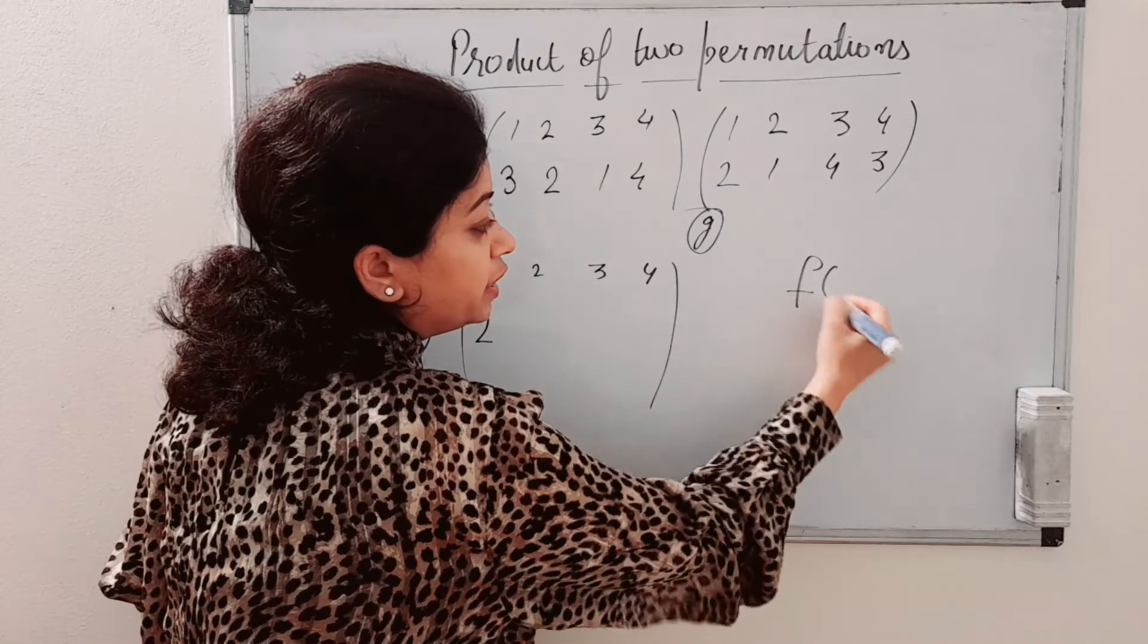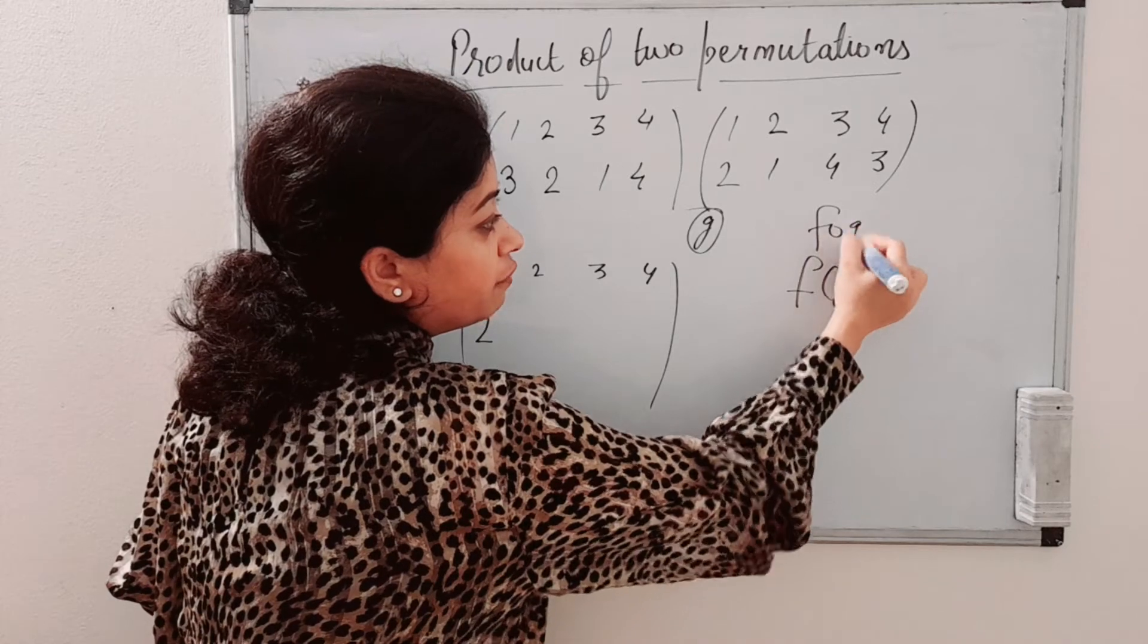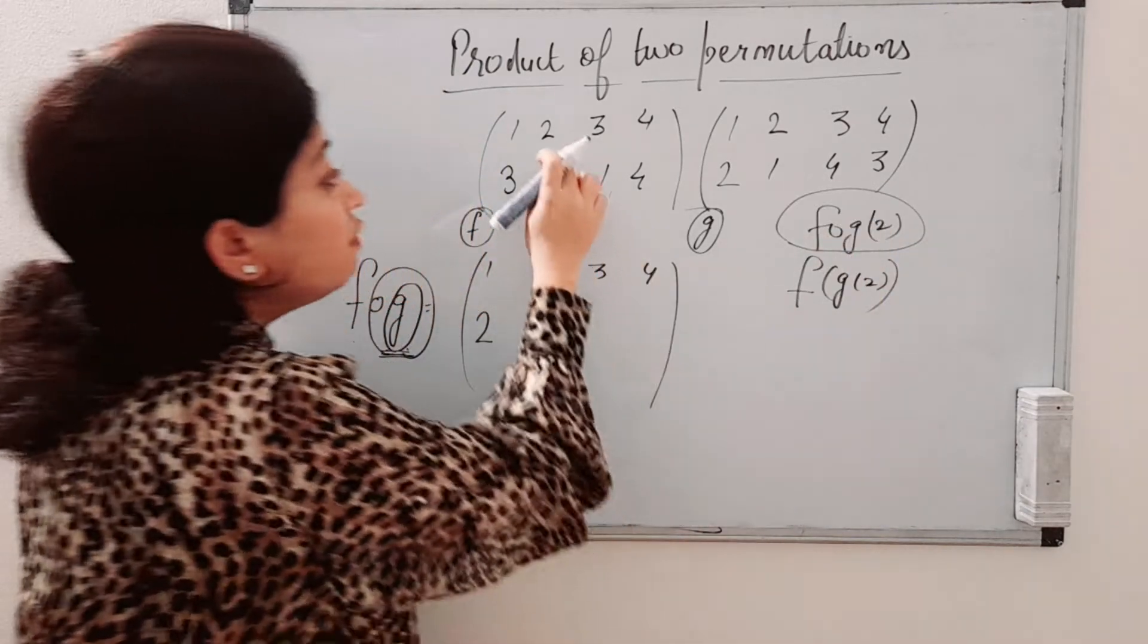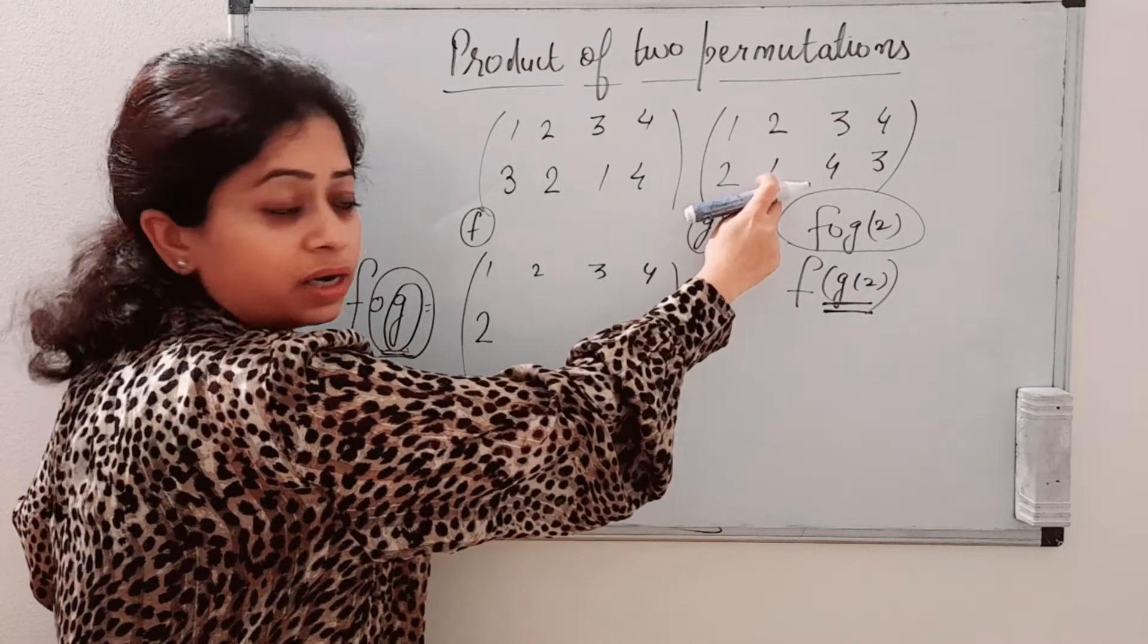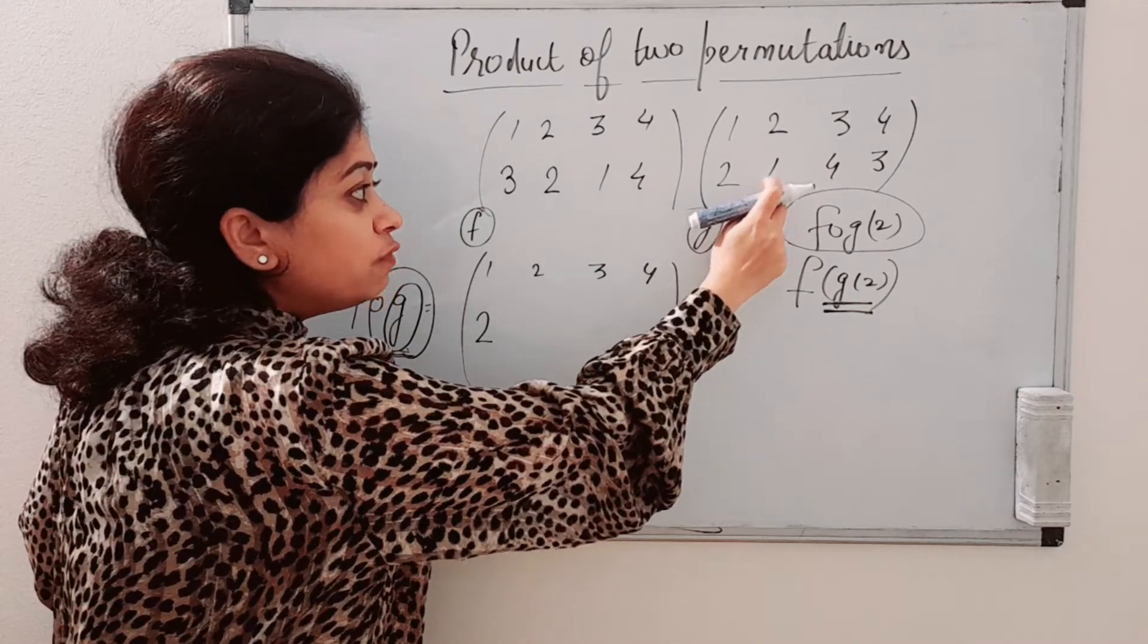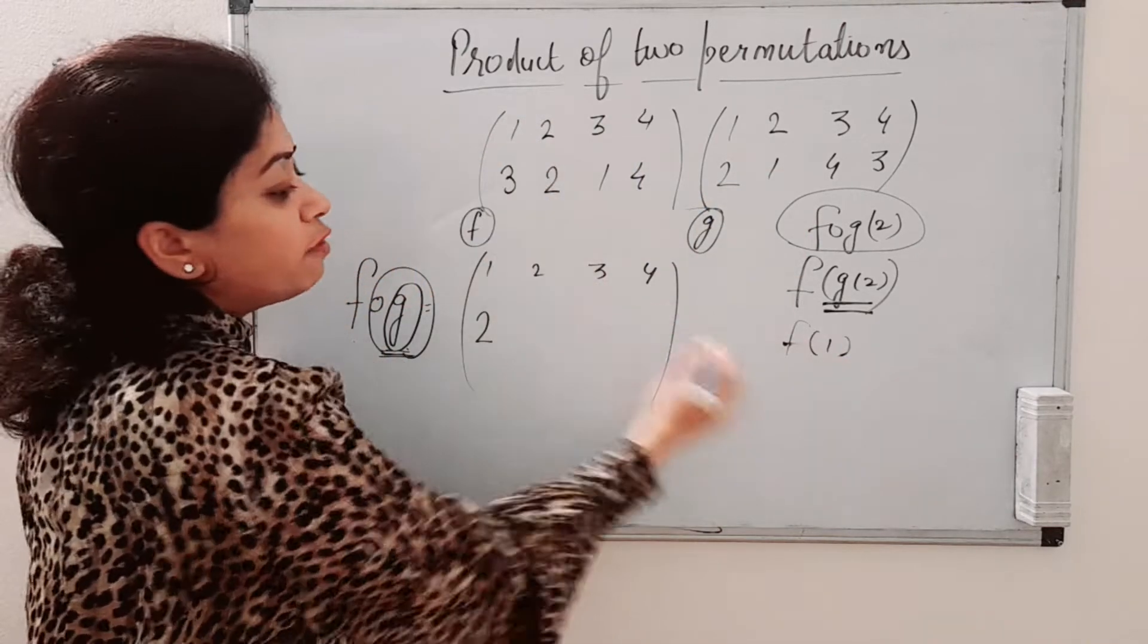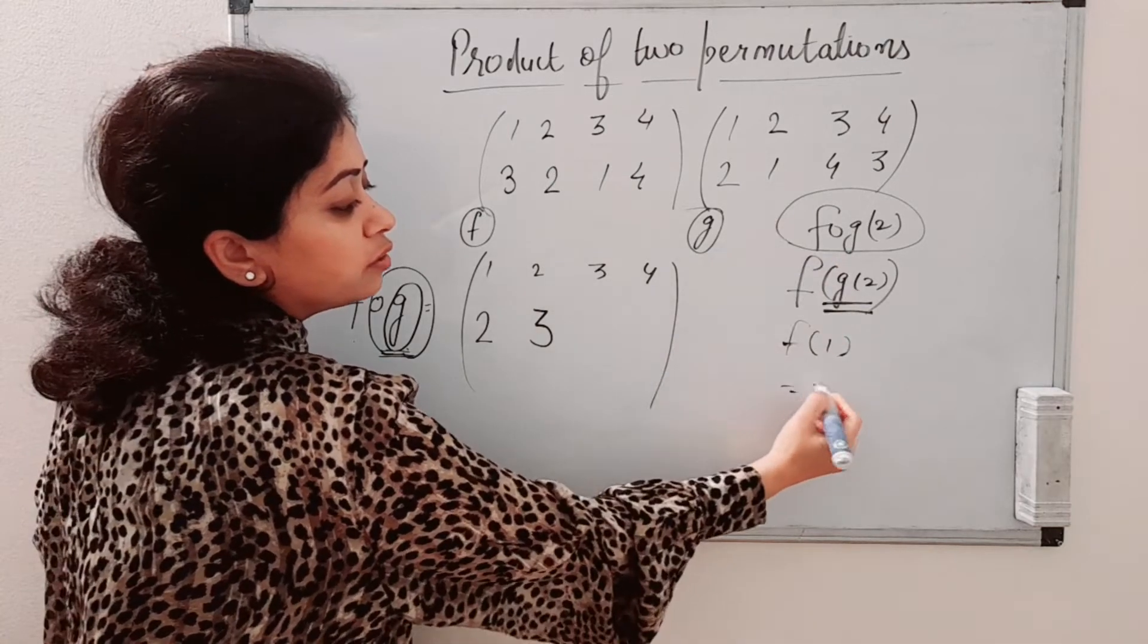Suppose we are calculating F of G of 2, that is F of G2. That means how will we solve? First of all we will calculate G of 2. G of 2 is 1. Now we will see image of 1 in F. G of 2 is 1, so F of 1 is 3. So F of G2 will be 3.